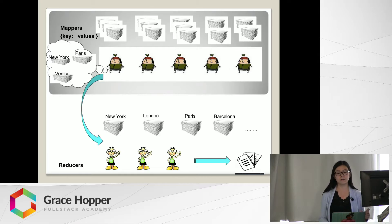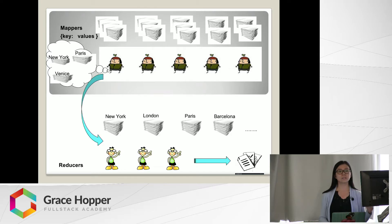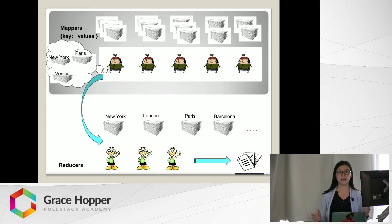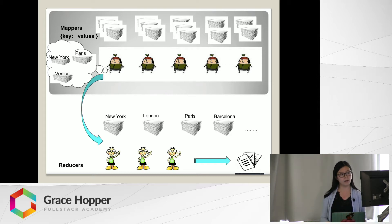With this huge sales data, we break it into several stacks and give each mapper several piles of documents to work with. Each mapper is expected to sort all the data according to the name of the city — so in front of each mapper we expect to see several piles: one pile for New York City, one pile for Paris, meaning all transactions that happened in Paris are gathered into the same pile. After the mappers finish, we call on the reducers, whose job is to ensure there is only one pile for each city. In the end, we will see only one huge pile for New York City transactions, one for London, and so on for all other cities.